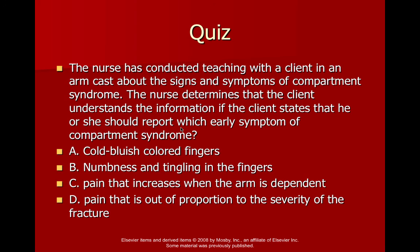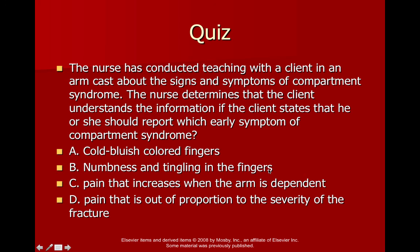The answer is B: numbness and tingling in the fingers. Don't feel bad if you didn't get that correct on the first try — about two out of twenty people will actually choose this one. Everything else is a later finding. Cold, bluish fingers — that's going to be late, like cyanosis. Pain out of proportion to the severity of the fracture comes when the swelling starts increasing beyond the numbness and tingling. Numbness and tingling is the first odd sensation when you're starting to have blood flow cut off — always look for this as an early finding.